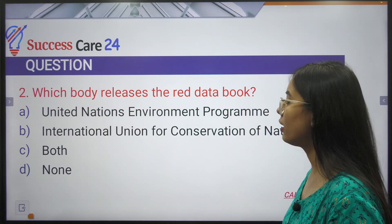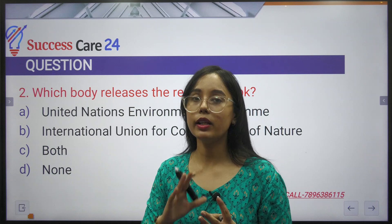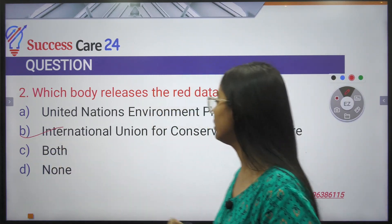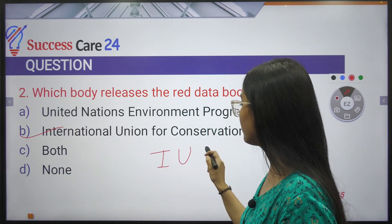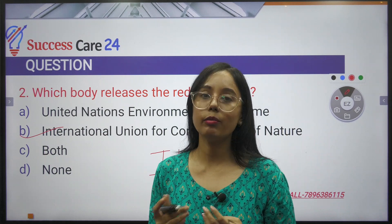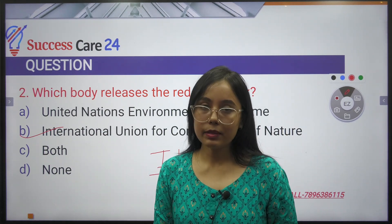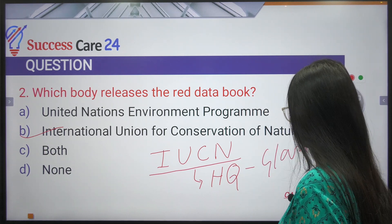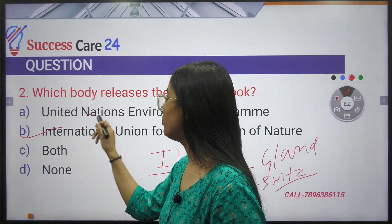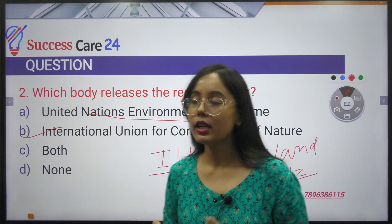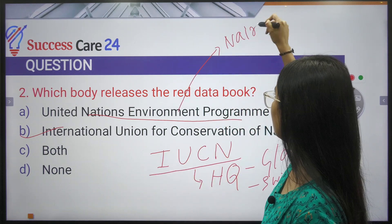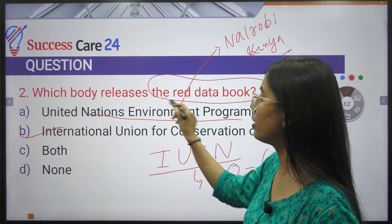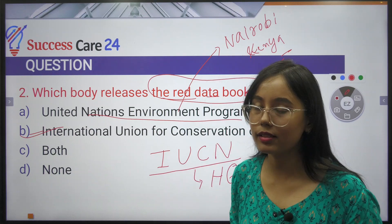Which body releases the Red Data Book? The Red Data Book lists endangered and rare species. That body is the International Union for Conservation of Nature — IUCN in short. IUCN is a very important international body for environmental conservation of species, plants, and animals. Its headquarters is in Gland, Switzerland. UNEP — United Nations Environment Programme — has its headquarters in Nairobi, Kenya.